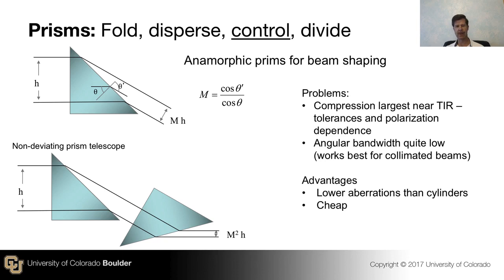The previous examples we showed of using prisms primarily treated them as compact solid mirrors, and that's a useful and very common technique. Now we're going to talk about primarily refracting through prism surfaces rather than reflecting off of them. The functions you can implement here are quite different than those you get via refraction through the surface of a lens, because that lens surface is curved.